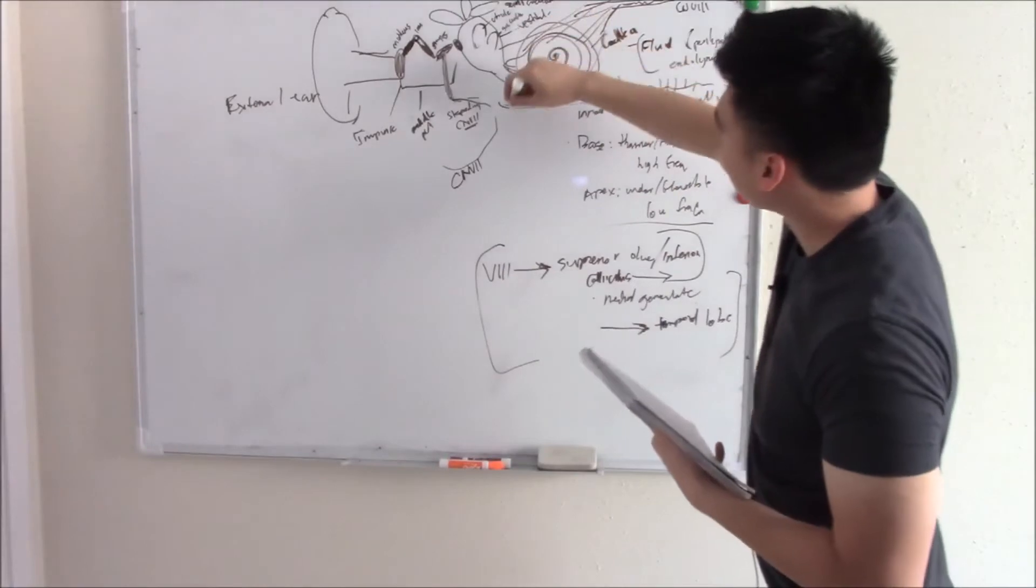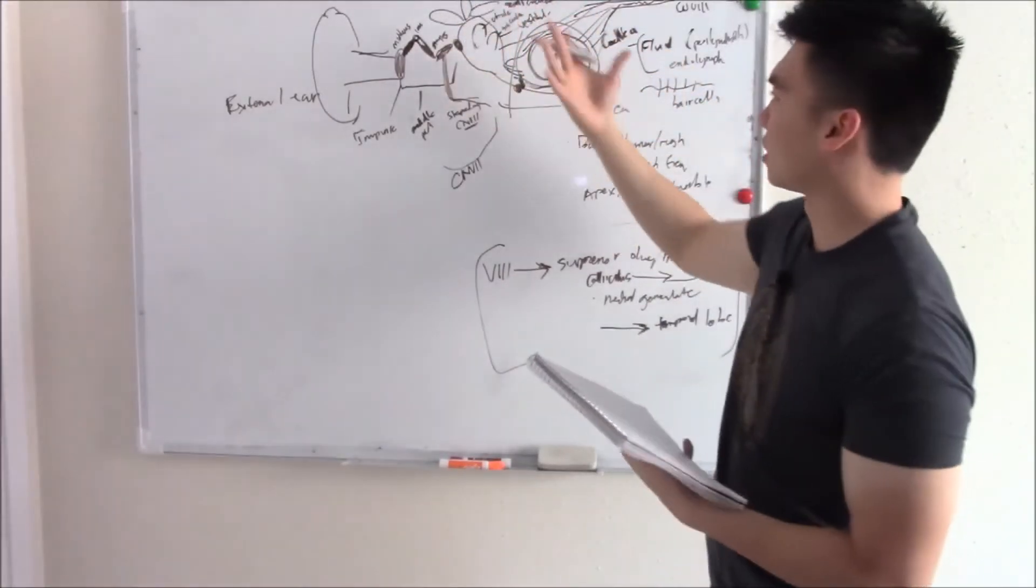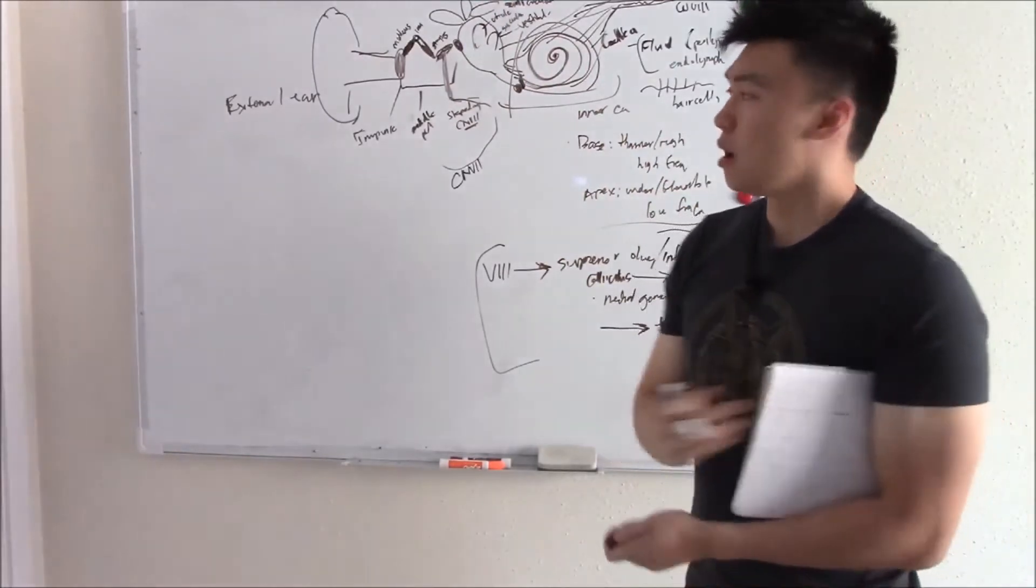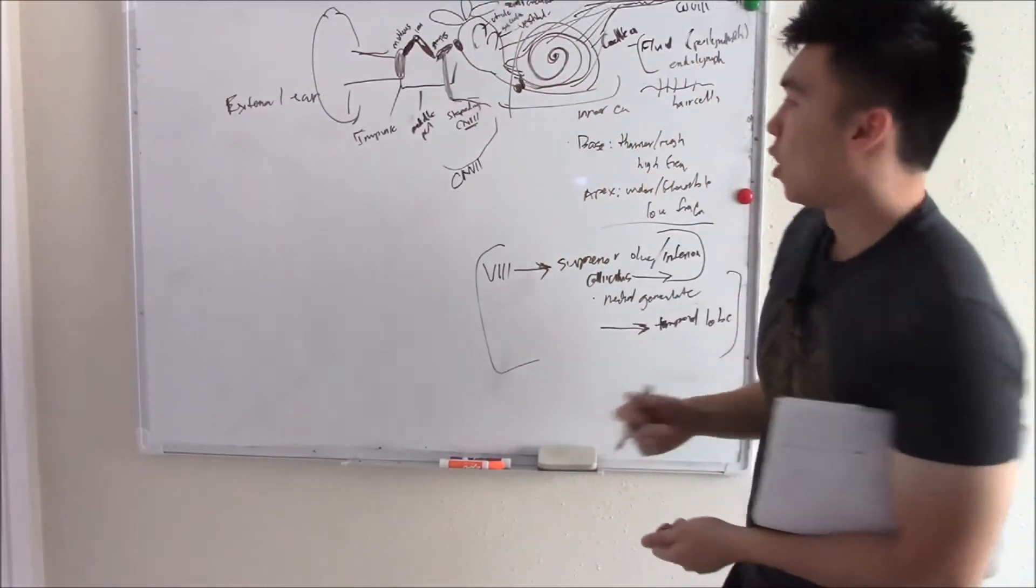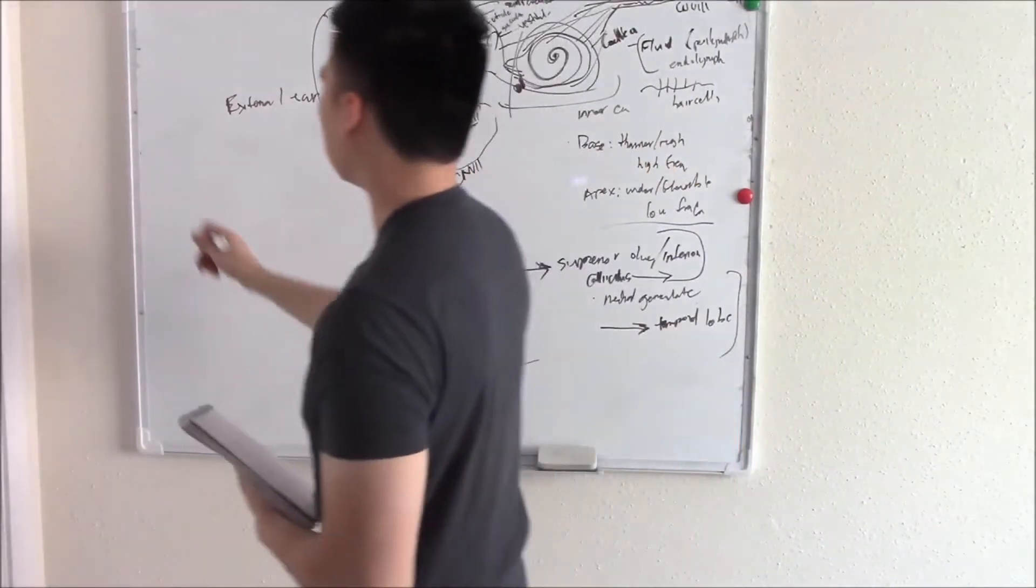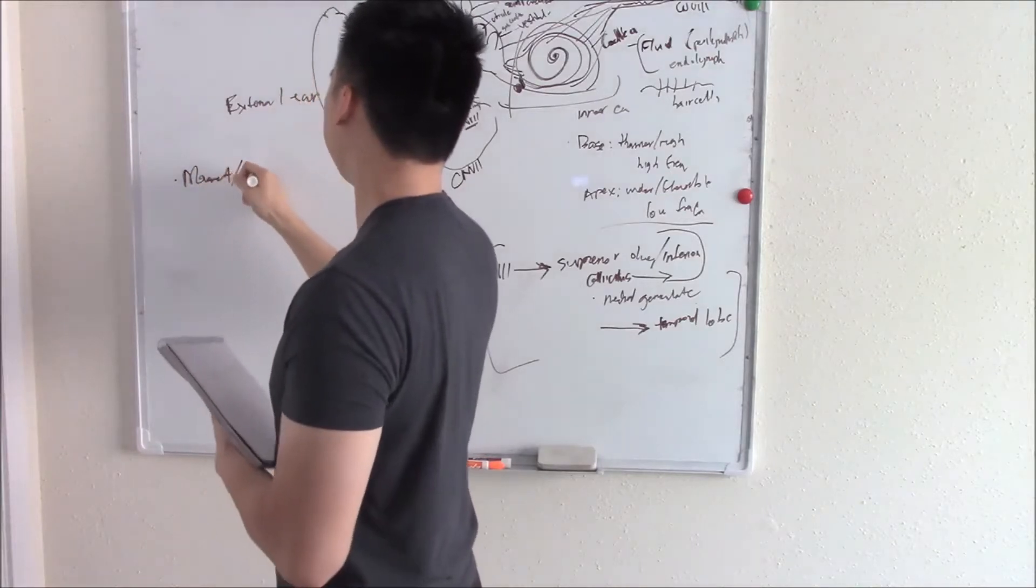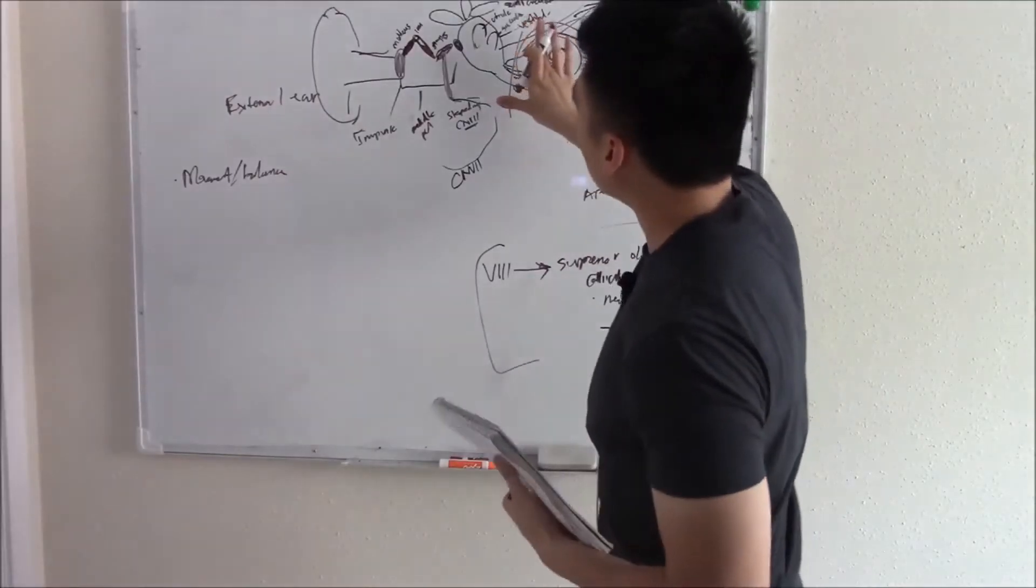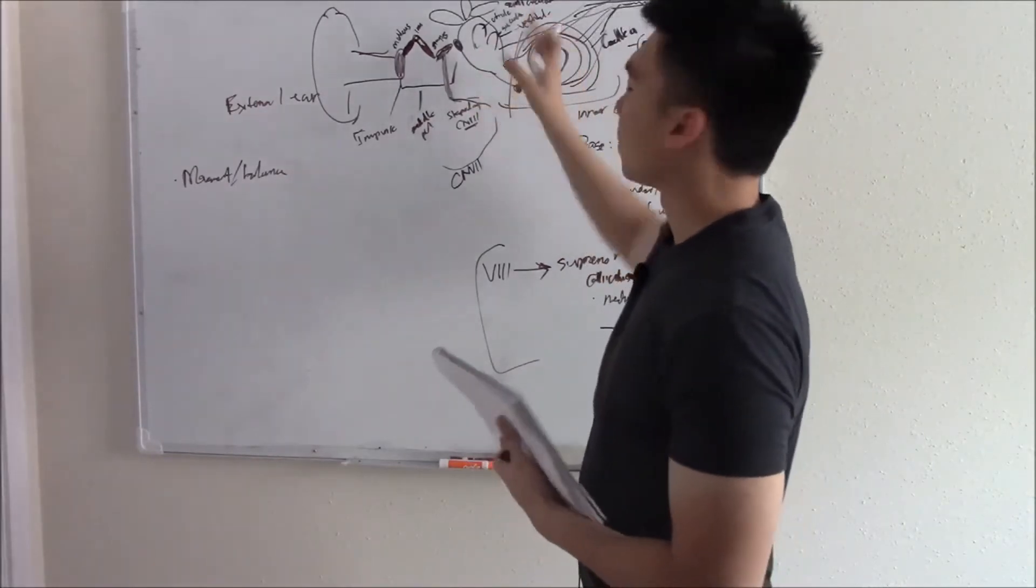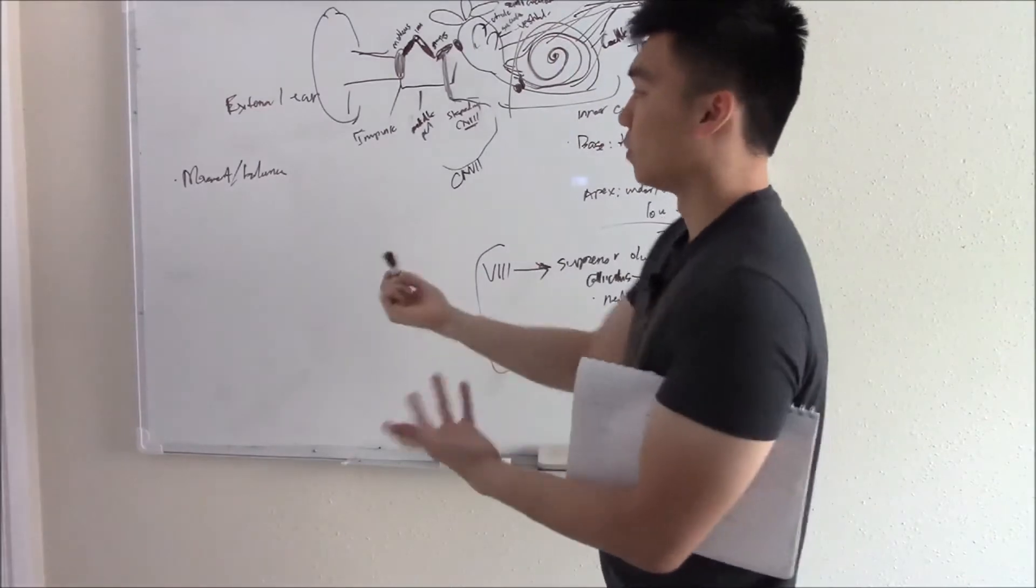Now, we talked about this structure, this cochlea structure, but we didn't talk about the other structures. Your semicircular canal, your utricle and saccule. Why don't we talk about that? What do they do? Well, another function of your ear is sensing movement and balance. So your vestibule with its utricle and saccule and your semicircular canal all makes up this vestibular system. And that deals with movement and balance.